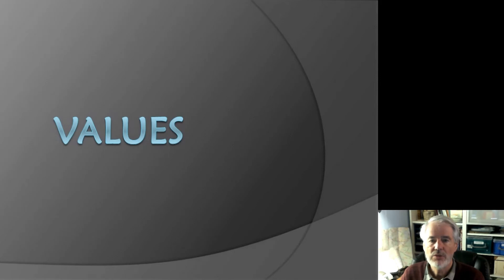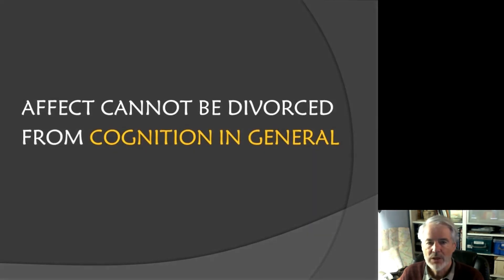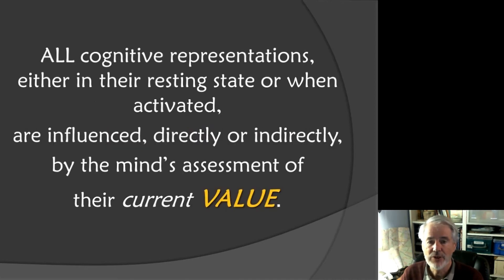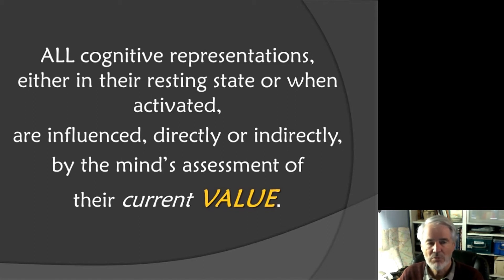So now we turn to values. Affect cannot be divorced from cognition in general, and this is all bound up with the notion of value. If you think of the mind as having hundreds and thousands of representations in different systems — remembering that the mind is a network of collaborative systems, each with their special function — each of these representations can be attached to a value, which will have a crucial effect on both its development, acquisition, and also in online processing.